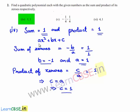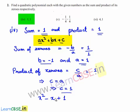Let us substitute the values of A, B, and C in the polynomial Ax² + Bx + C. Then we will get x² minus x plus 1. Hence, the required quadratic polynomial is x² - x + 1.